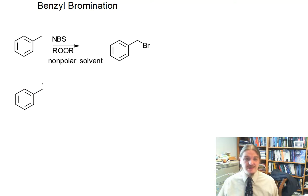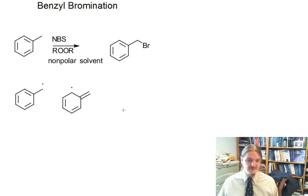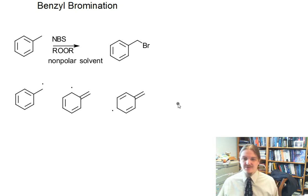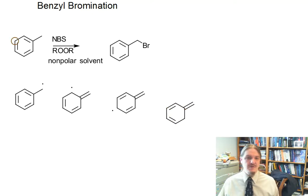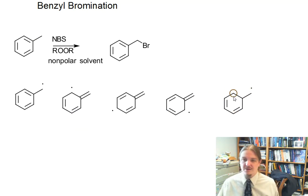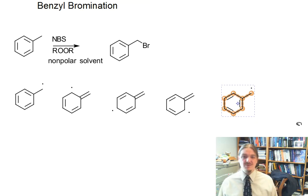This radical is resonance stabilized. There are actually a lot of resonance contributors for this radical — there should be five. Work on drawing them all. Because this radical is resonance stabilized, this is where we get the radical substitution. There's actually one more version that looks a lot like the first, except that the pi bonds in the ring are at alternating positions. So there are five resonance contributors for this radical — really stabilized.